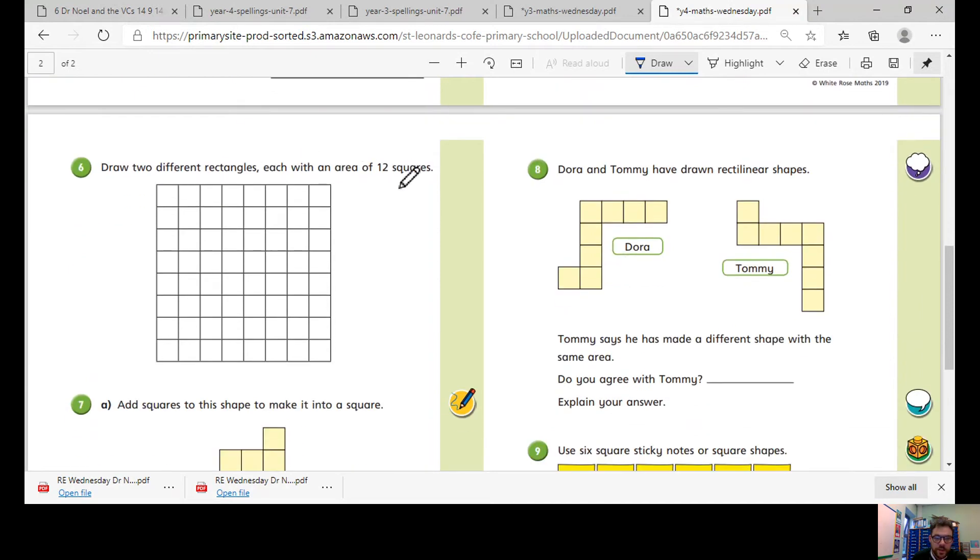Number six, draw two different rectangles each of the area of 12. So two different rectangles. Have a think at what times table 12 appears in. For a clue, one times 12 equals 12, so we could have a rectangle that is one by 12 long. If you've got space, you might not be able to, so have a look what times table 12 appears in to help you.